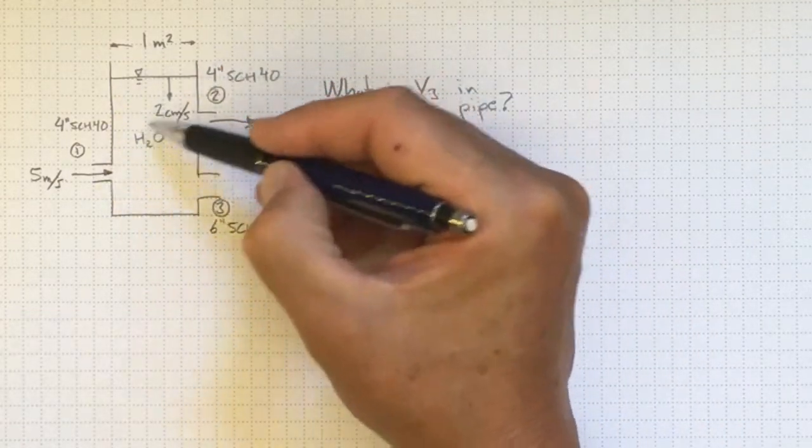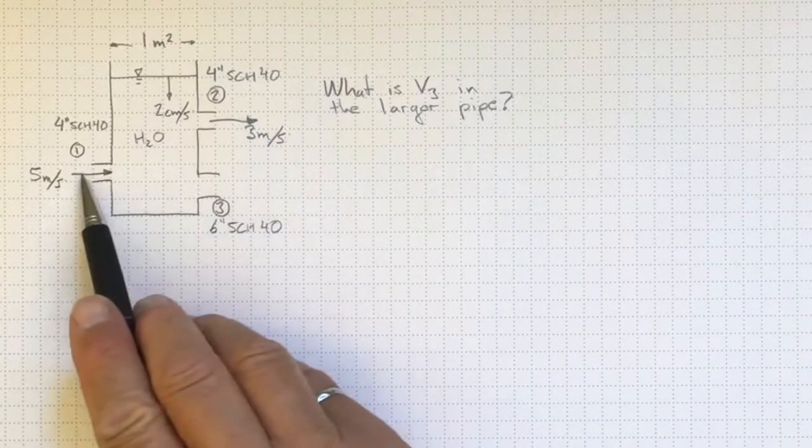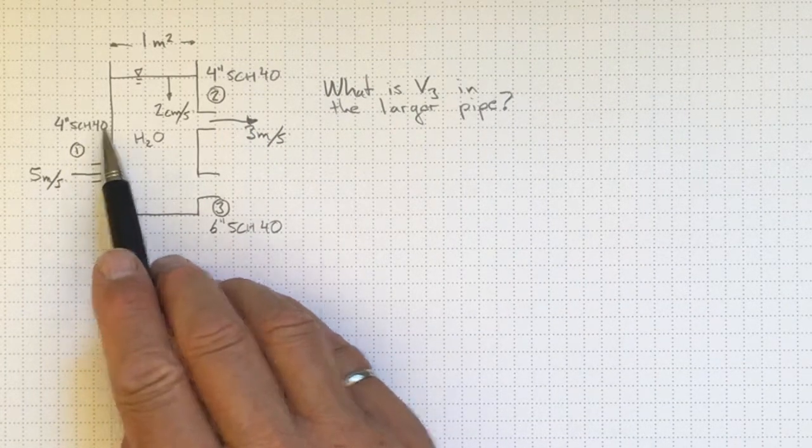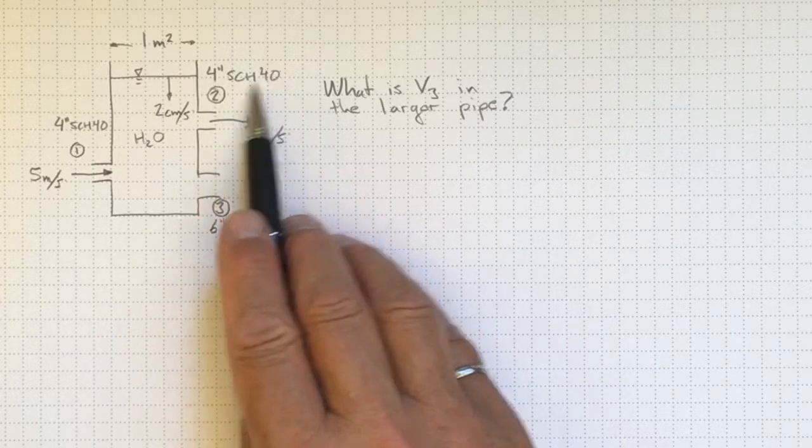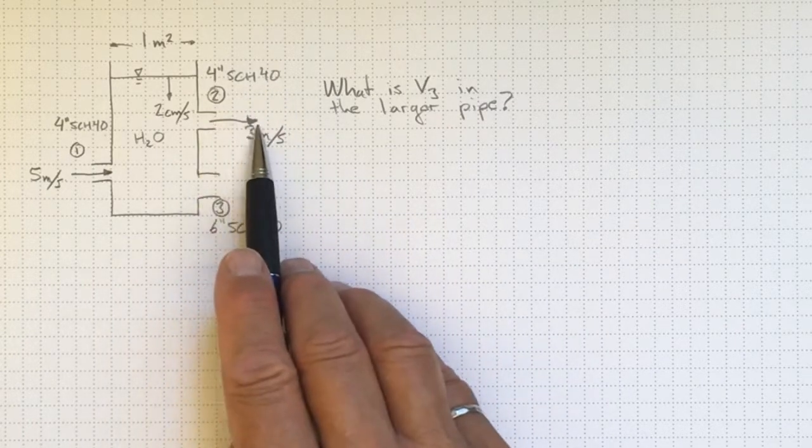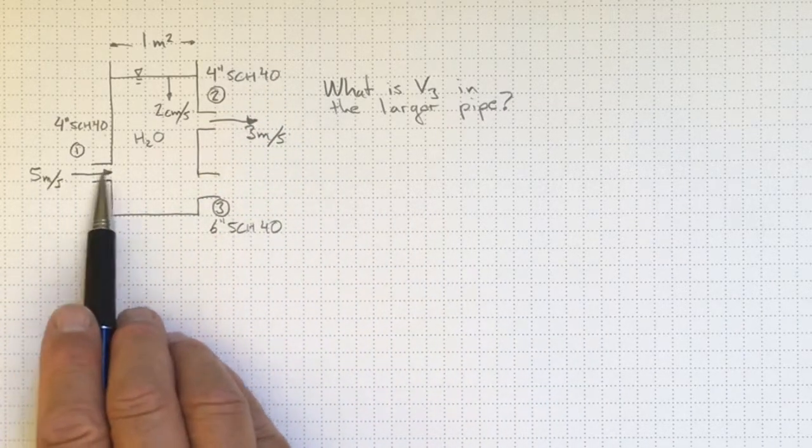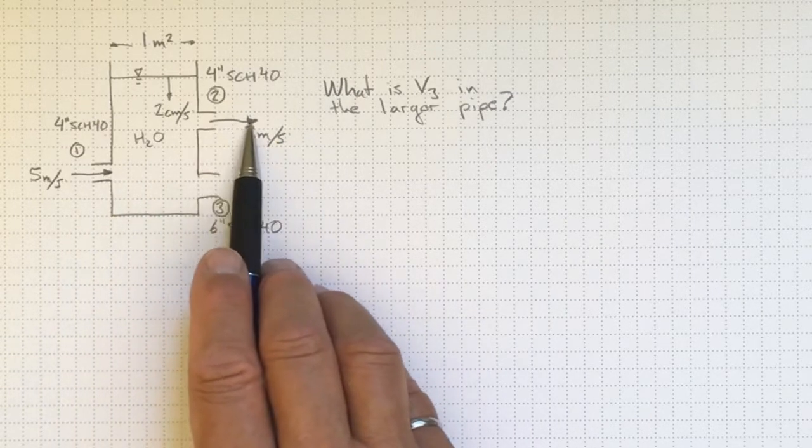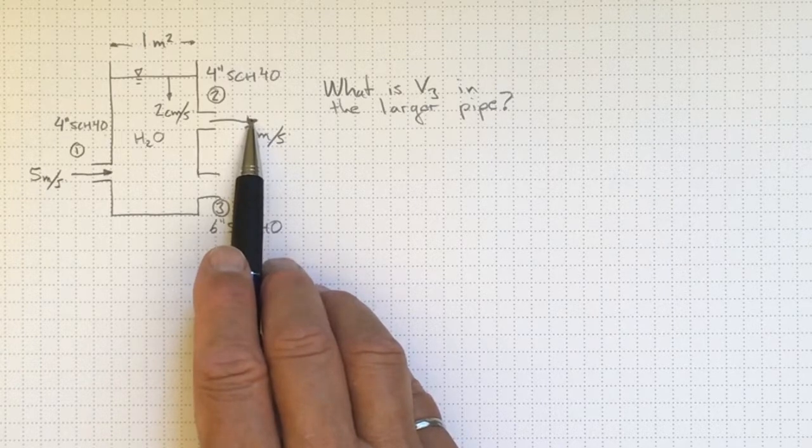This tank of water has three pipes: an inlet over here that's a 4-inch Schedule 40 steel pipe, an outlet over here that's a 4-inch Schedule 40 steel pipe. There's water coming in at 5 meters per second average velocity here and going out at 3 meters per second average velocity there.